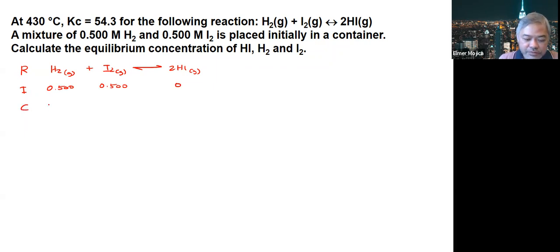Looking at the changes: this is minus X, minus X, and plus 2X. So at equilibrium: 0.5 minus X, 0.5 minus X, and 2X.